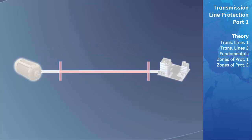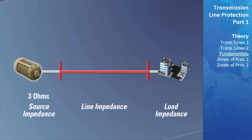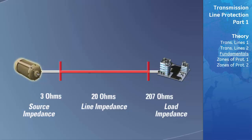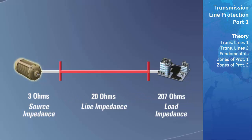Each component in a power system, whether it is a source, a transmission line, or a load, has an impedance. This total system impedance limits the magnitude of current that will flow through the power system. In the power system seen here, we have a total system impedance of 230 ohms. If the source were generating power at 230 kilovolts phase to neutral, 1000 amps of current would be supplied to our load.